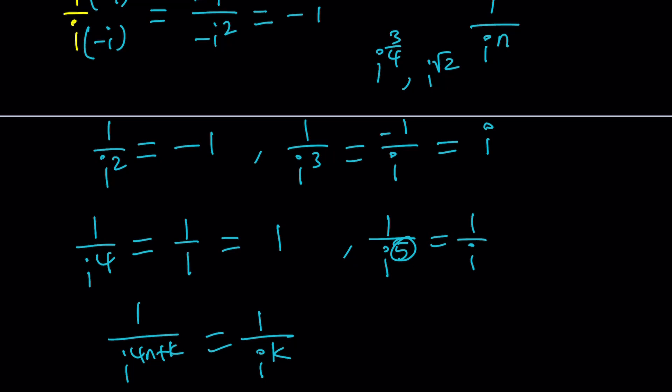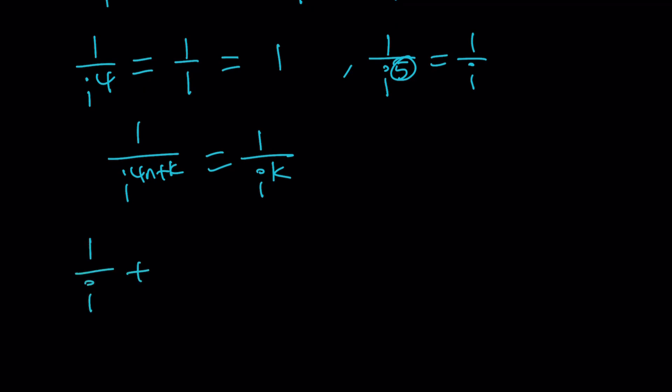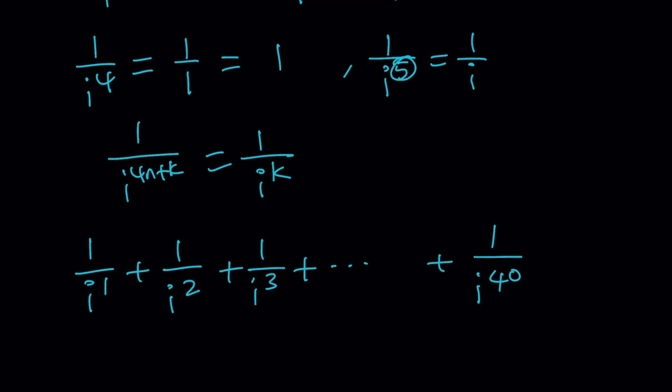So let's see how many terms we have. A lot of things are going to cancel out, and you need to know what's left over. We have from I to the first to I to the 40th, so there are 40 terms. The number of terms is a multiple of 4 — what does that mean? Every 4 consecutive terms are going to cancel out, so we're going to end up with nothing. Everything cancels out, and this sum is equal to 0.